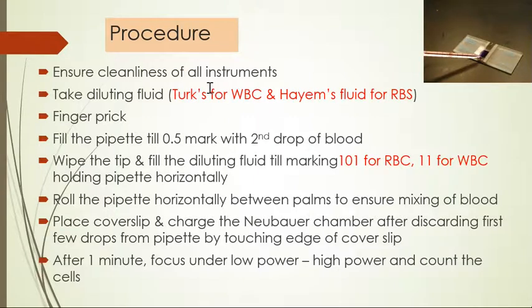Using aseptic technique, prick the finger. Fill the pipette till 0.5 mark with second drop of blood. Wipe the tip so the extra blood is removed, then fill the diluting fluid till marking - for RBC fill till 101, and for WBC till 11, holding the pipette horizontally.